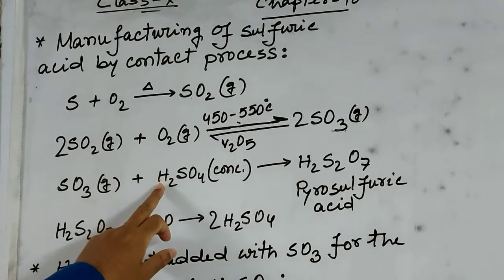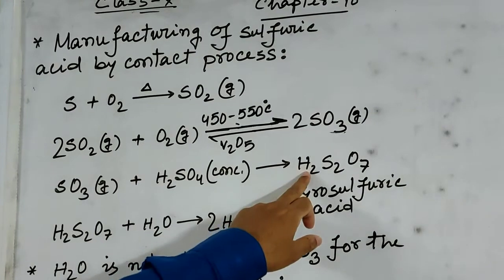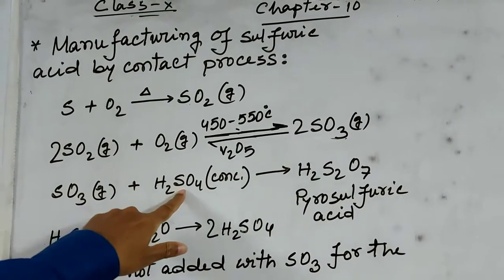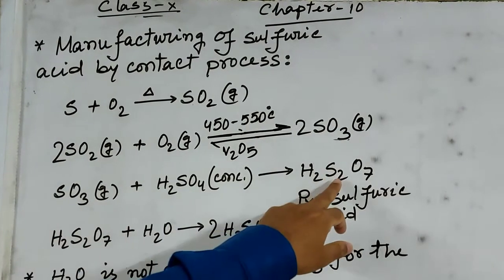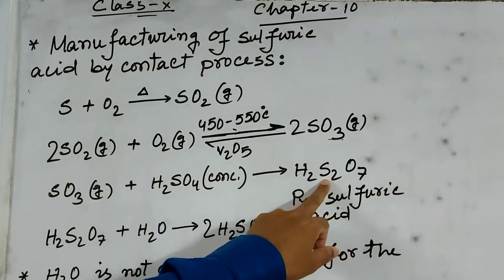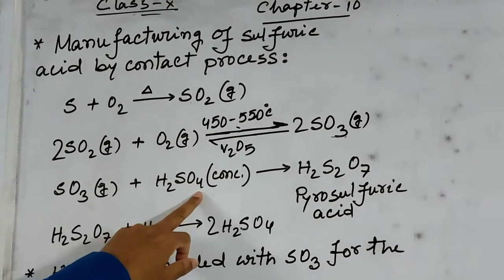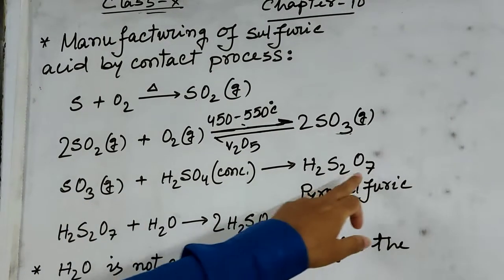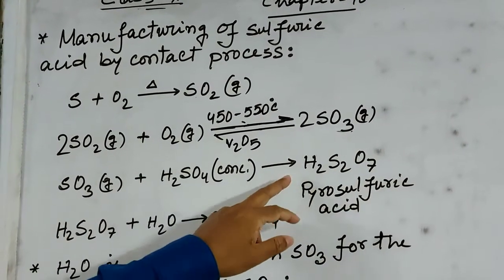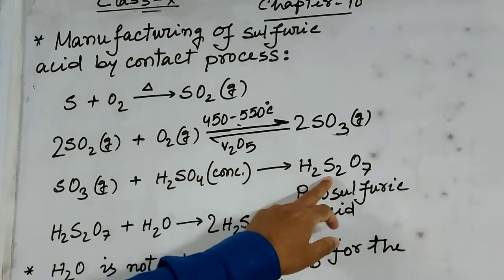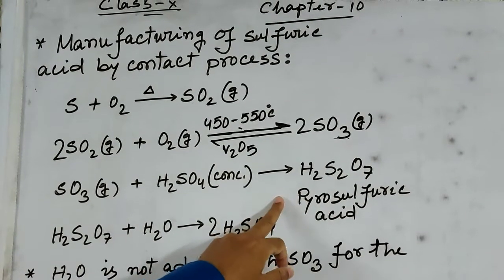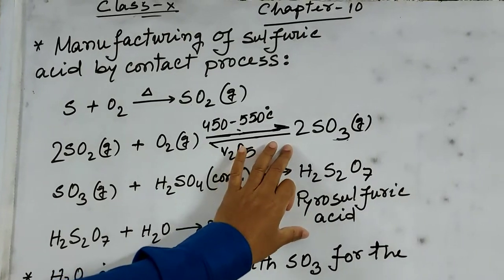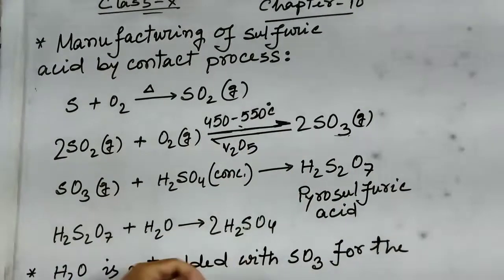If you observe this reaction, you will see there are two hydrogen atoms on the right side, and one plus one equals two sulphur atoms. Also, four oxygen plus three oxygen equals seven oxygen. That's why the resulting formula is H₂S₂O₇. This compound is known as pyrosulphuric acid.